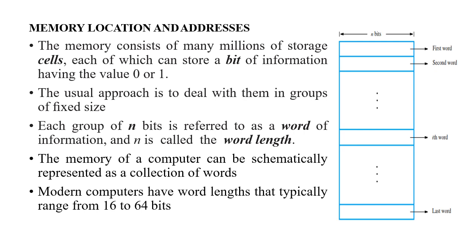A memory is a device that consists of many millions of storage cells, and each cell will have one bit of information — either zero or one. This information is very minute, so in order to avoid accessing individual bits, the better approach is to group a number of bits together and address, transfer, or process them wherever required. This group of bits is called a word.